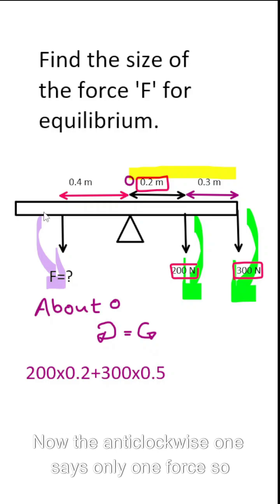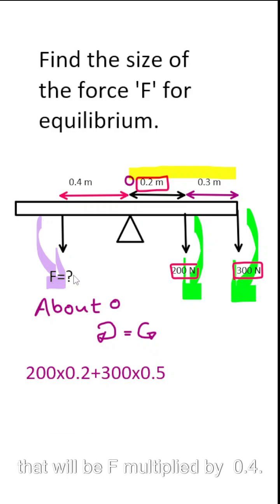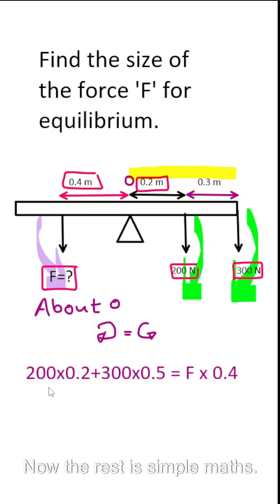Now the anticlockwise ones, that's only one force. So that will be F multiplied by 0.4. Now the rest is simple.